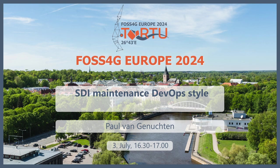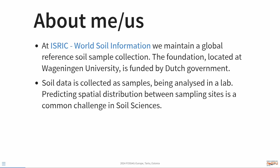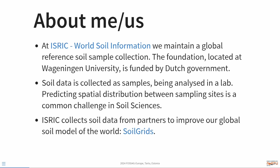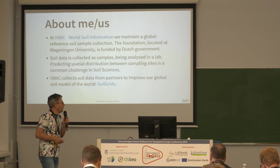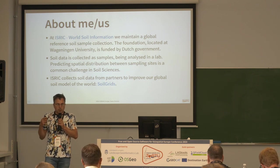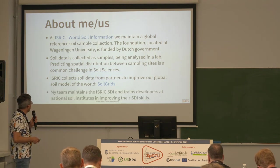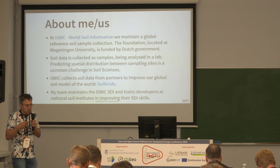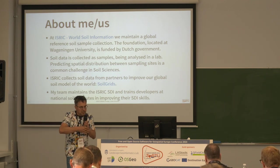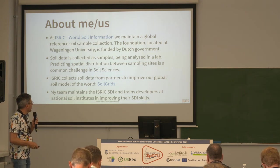Soil data is typically collected as samples from fields, and then it's up to our statisticians to predict the distribution of that soil between sample points. We apply a lot of spatial statistics and machine learning to get that done. We collect a lot of data from partners, national soil institutes, and research projects, and combine all that data into a global model of the soil called SoilGrids. My team maintains the spatial data infrastructure that ingests all that data and advertises those data products to the wider world.